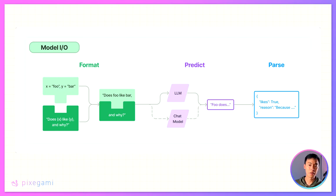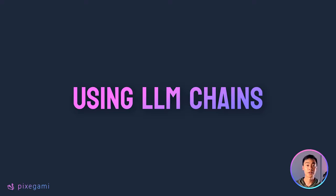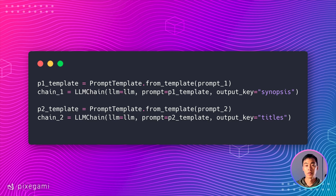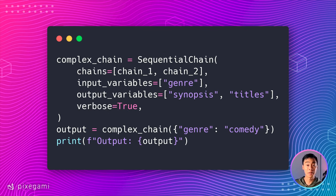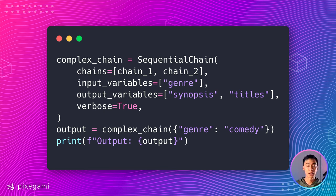So remember when I said at the beginning of the video that Langchain's formatting utility would become useful later? Well here's why. One of Langchain's core features is that it allows you to chain together a sequence of prompts. This is useful if you have prompts where the input depends on the output of another prompt. For example, here I have one prompt to come up with a synopsis for a movie, and then a second prompt to come up with a title for that movie based on the synopsis. If you have a situation like this, you can chain them together using a sequential chain. A sequence can have multiple input keys and output keys, and they'll plug in the appropriate value into each prompt at each step of the chain.